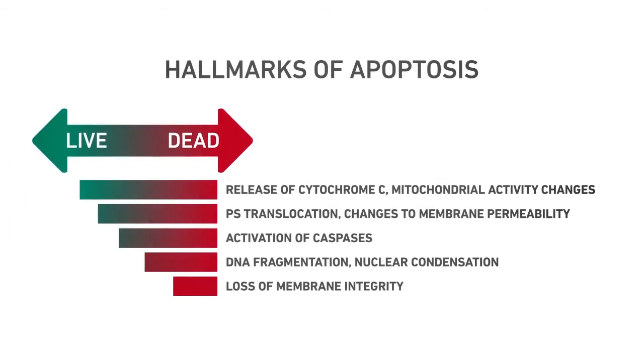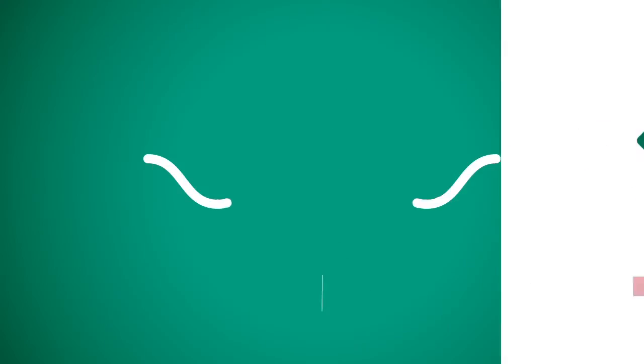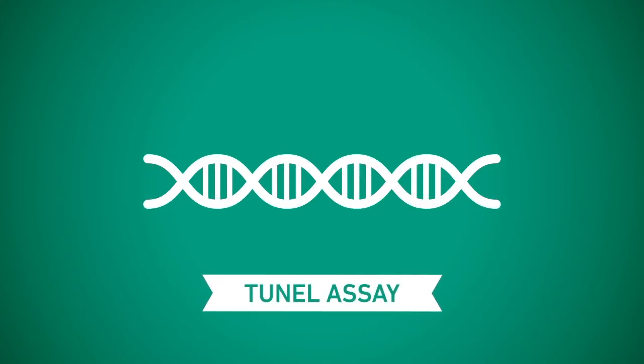Many different methods have been developed that target the various hallmarks of apoptosis. However, detection of apoptotic cells in tissue samples represents a challenge. The TUNEL assay, introduced in 1992, is the most widely used method to detect apoptotic cells within tissue samples.